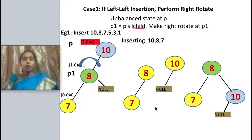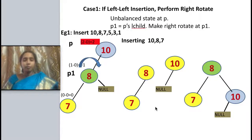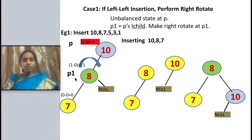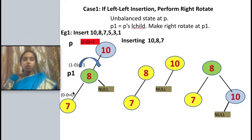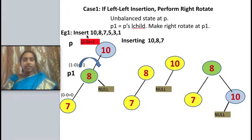If I am having an unbalanced tree on the left-left side, I have to rotate to the right side. Think of a physical balance in a market — if it is unbalanced on one side, you add weight to the opposite side. So if the unbalanced condition is on the left side, you rotate to the right. From the leaf node we find the balance factor; if it is other than plus 1, minus 1, or 0, that is an unbalanced condition.